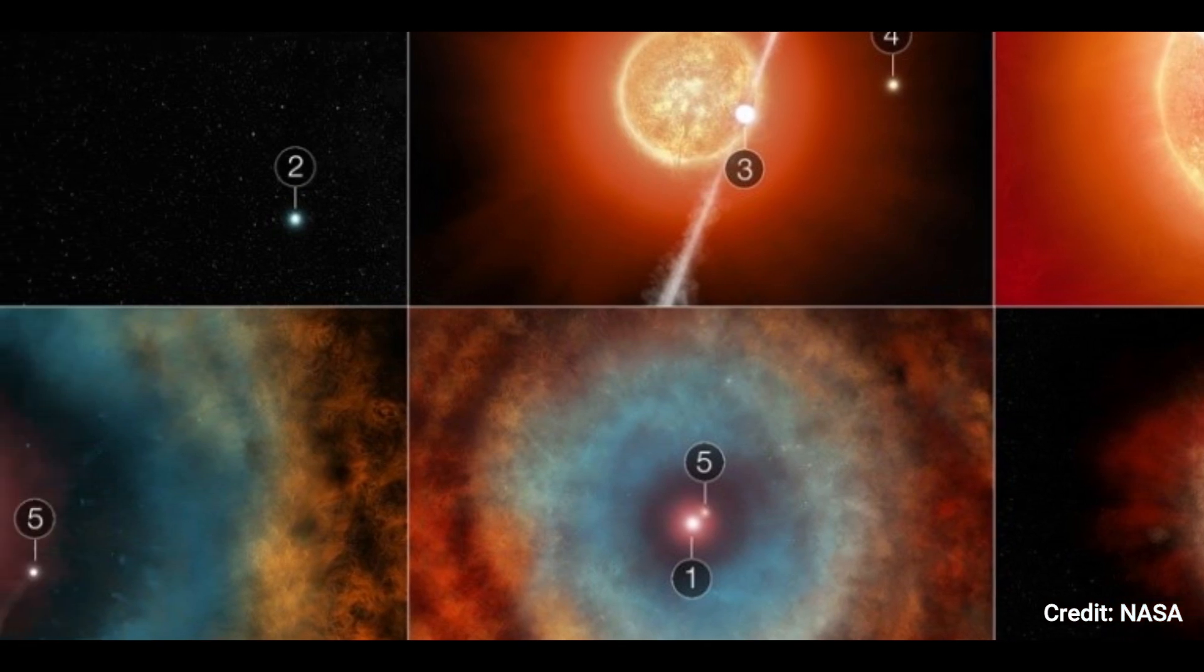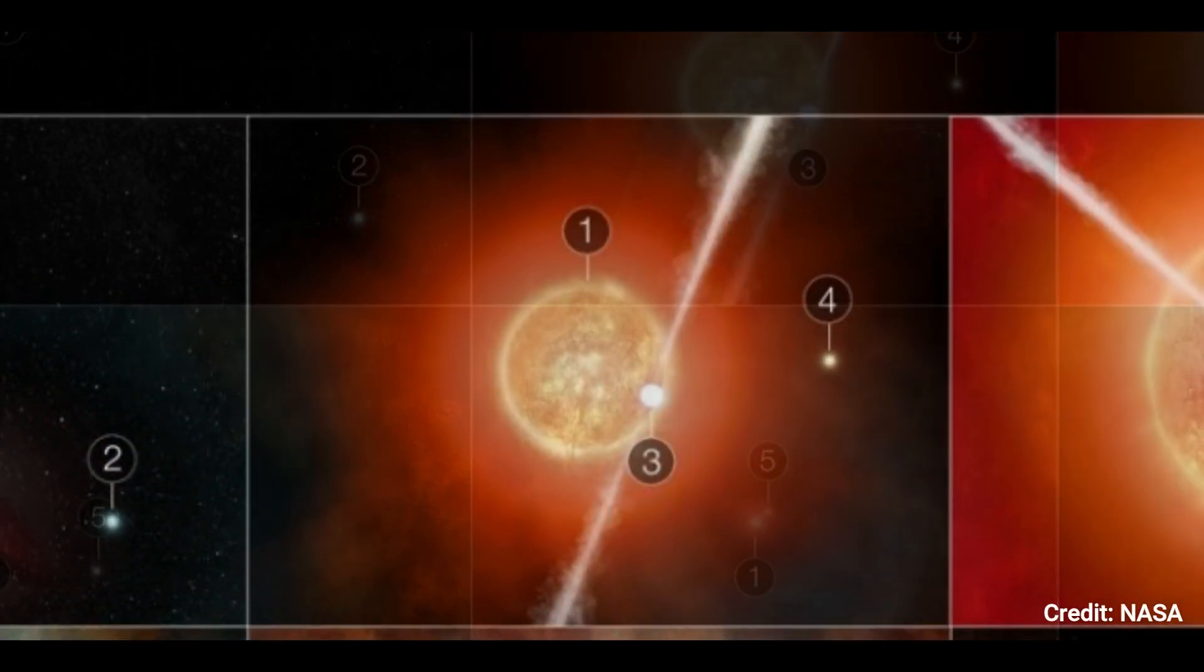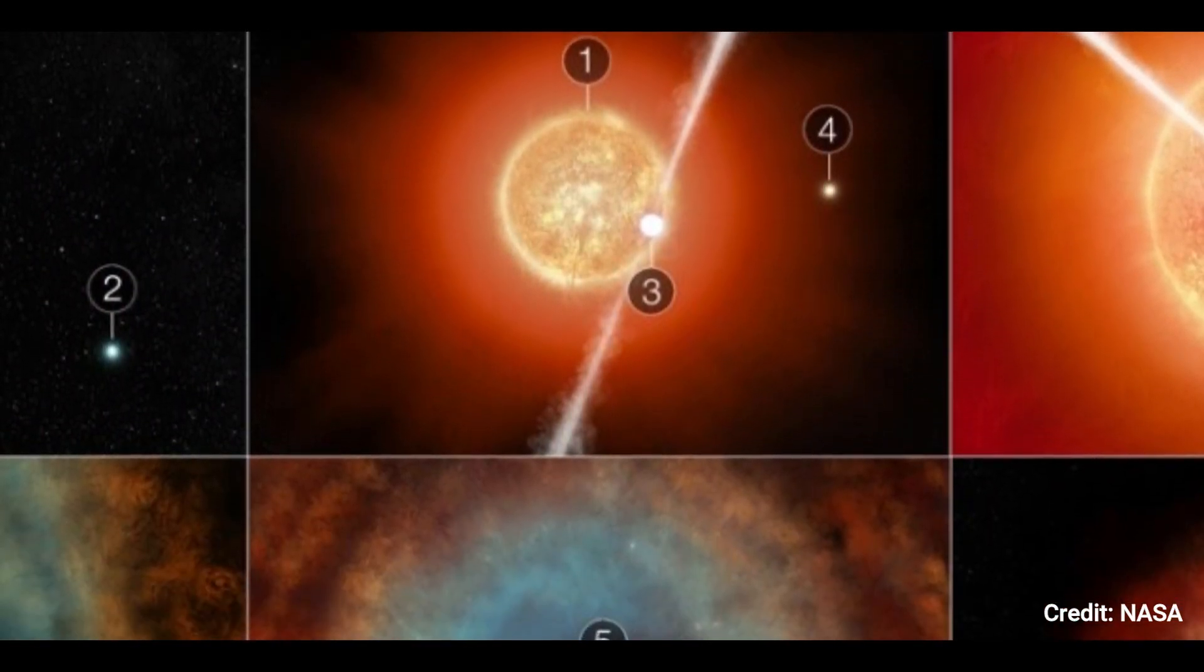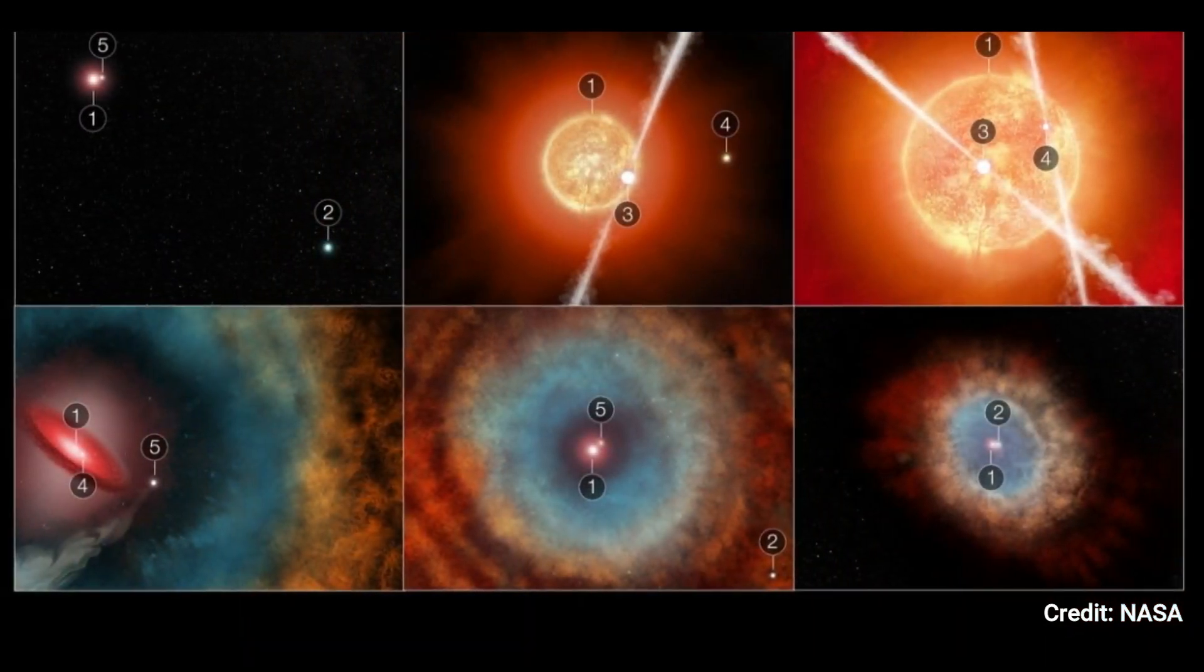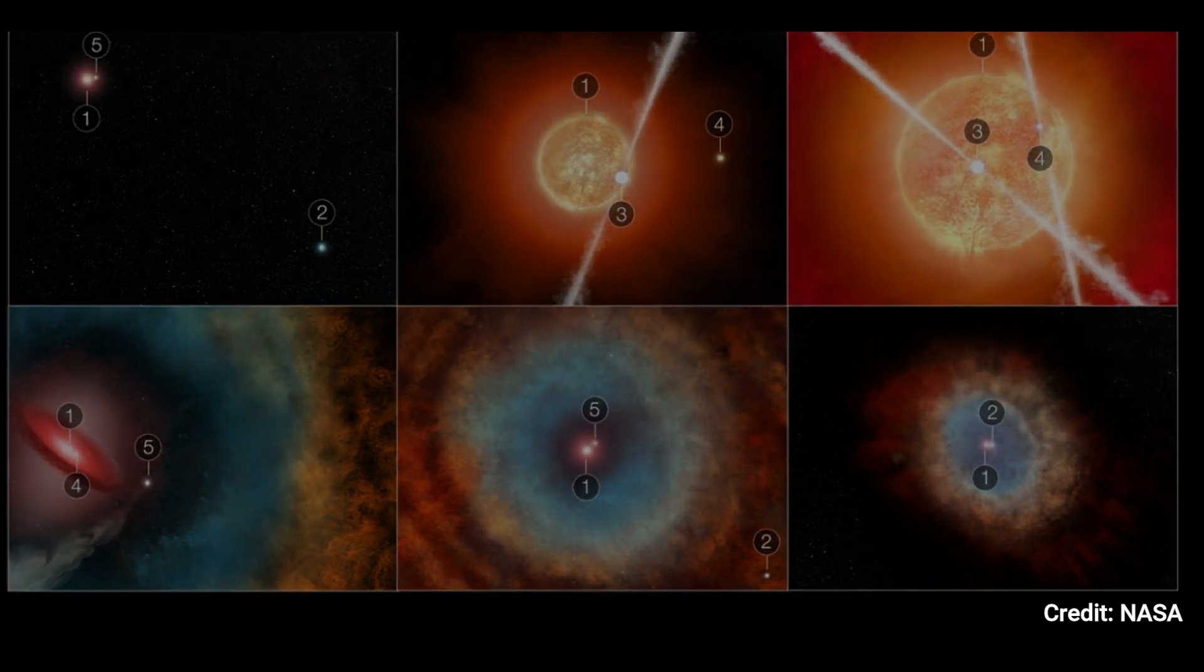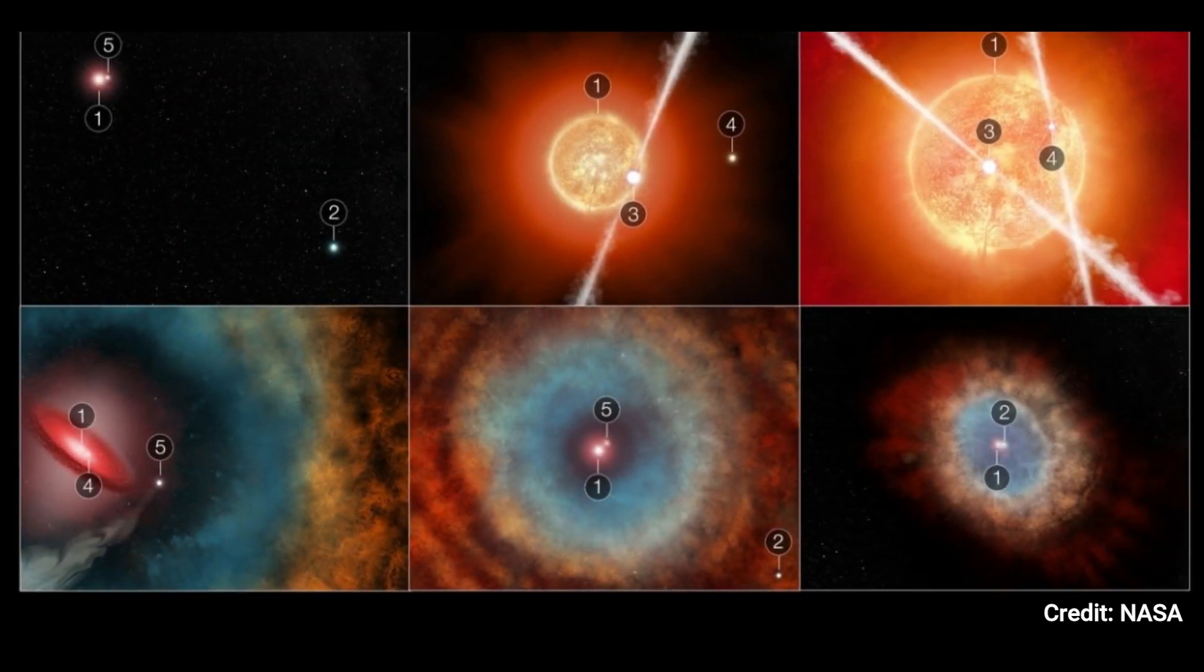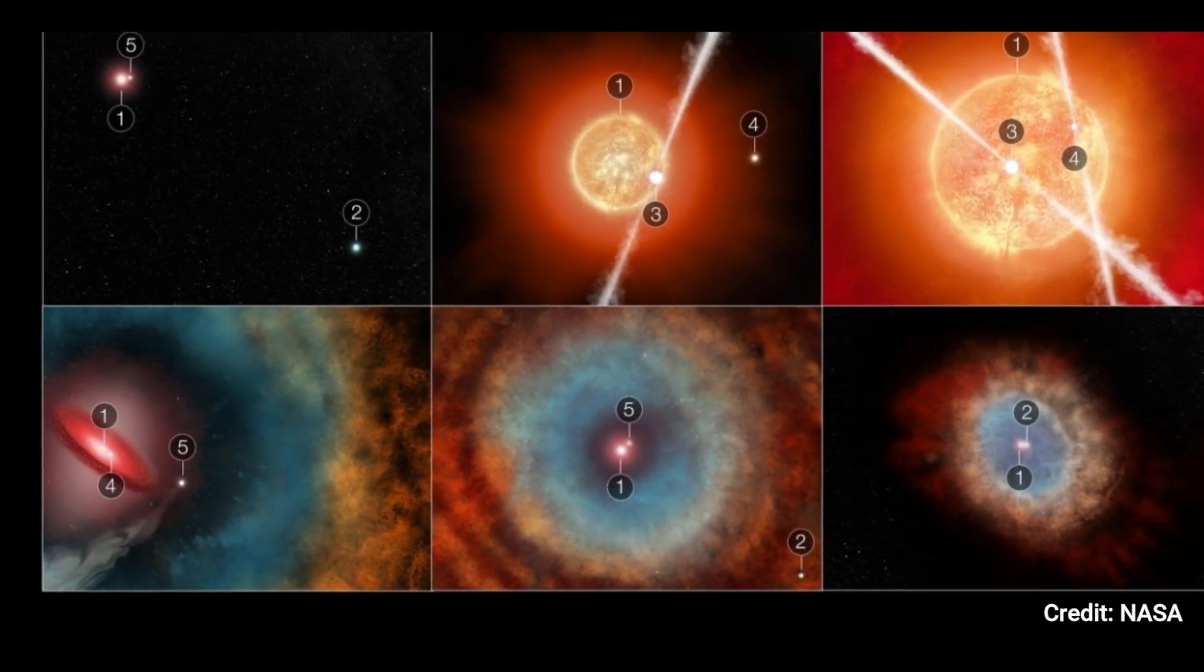However, there is another star on the scene. Number 5. It orbits star 1 much more closely than star 2. Let the games begin. The second panel zooms in on the scenario, revealing two more friends. Star 1 has begun to enlarge due to its rapid aging, swallowing star 3. Star 3 begins to suck material from star 1 through gravity, and launches jets in both directions.